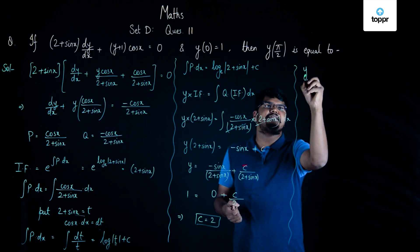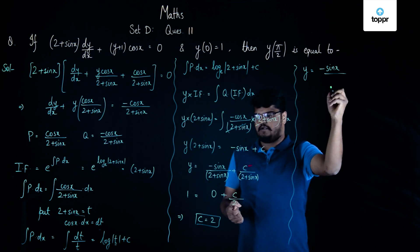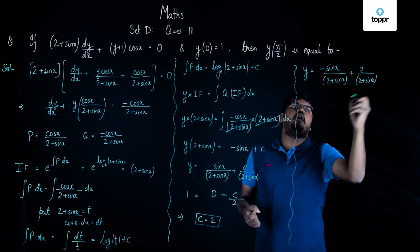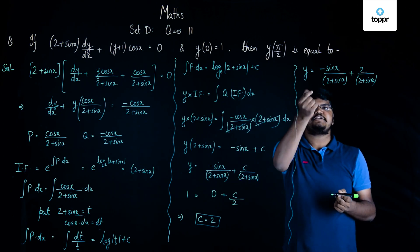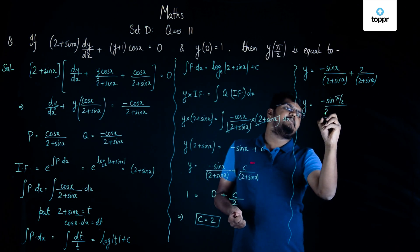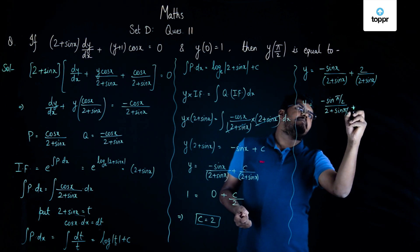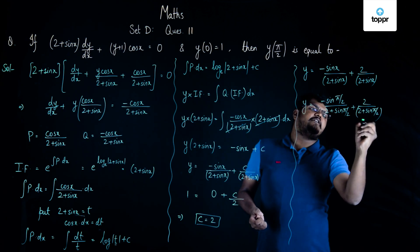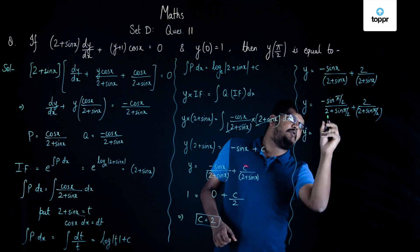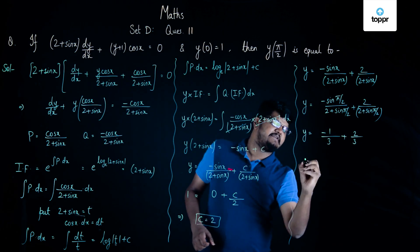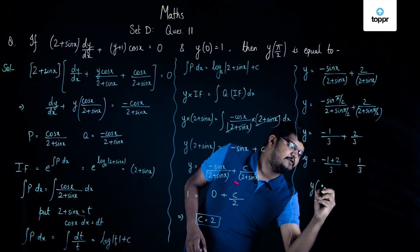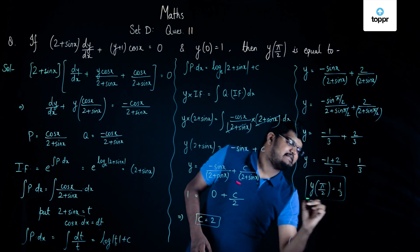Substituting c = 2, our solution is y = −sin x/(2 + sin x) + 2/(2 + sin x). To find y(π/2), we substitute x = π/2: y = −sin(π/2)/(2 + sin(π/2)) + 2/(2 + sin(π/2)). Since sin(π/2) = 1, this becomes y = −1/3 + 2/3 = 1/3. Therefore y(π/2) = 1/3.